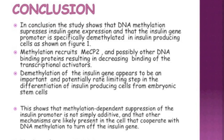In conclusion, this study shows that DNA methylation suppresses insulin gene expression and that the insulin gene promoter is specifically demethylated in insulin-producing cells. Methylation recruits MeCP2 and possibly other DNA binding proteins, resulting in decreased binding of transcriptional activators. Demethylation of the insulin gene appears to be an important and potentially rate-limiting step in the differentiation of insulin-producing cells from embryonic stem cells. This shows that methylation-dependent suppression of the insulin promoter is not simply additive, and other mechanisms are likely present in cells that cooperate with DNA methylation to turn off the insulin gene.